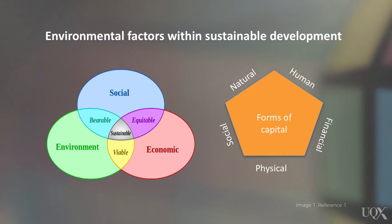However, environmental factors were often relegated to what economists call an externality, meaning that there were no markets to account for either environmental harms or benefits. This slide shows us two common representations of environmental factors within sustainable development literature. The Venn diagram on the left focuses on the convergence of environmental, social, and economic factors to present sustainable development as the overlapping area.